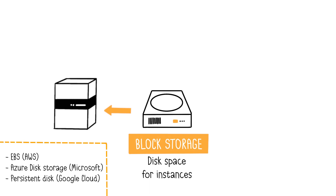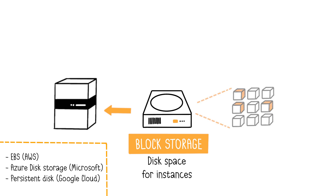Let's start with block storage. In the cloud, block storage is seen as disk space for instances where they can store their data. It's comparable to employing block storage as an exclusive disk for your virtual machine. Examples of block storage offerings include AWS EBS (Elastic Block Storage), Azure Disk Storage, and Google Cloud Persistent Disk. With block storage, a file is divided into multiple data blocks, hence its name, and stored separately.